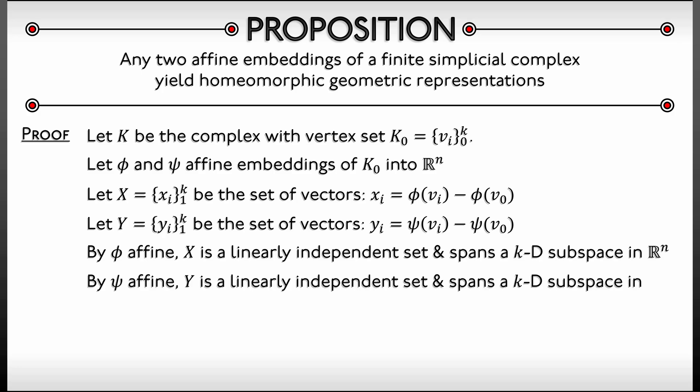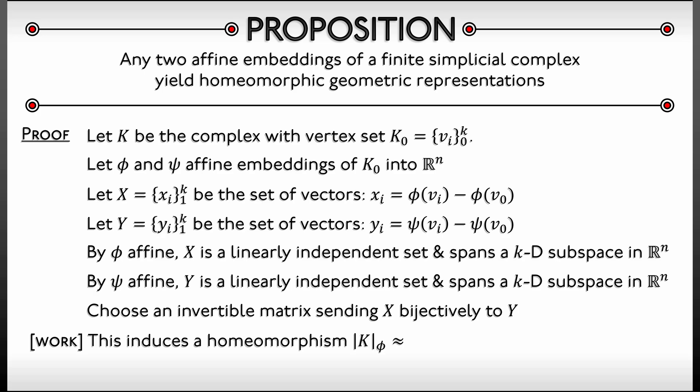So we have these two different k-dimensional subspaces in two different copies of Rⁿ. Choose an invertible matrix that sends the set X bijectively to the set Y. And that's really what we need in order to show that the two geometric representations are homeomorphic. The details of that are going to take a little bit of work, but this is really the setup to show that this induces a homeomorphism between the two geometric representations of our complex K. That's what we wanted to show.